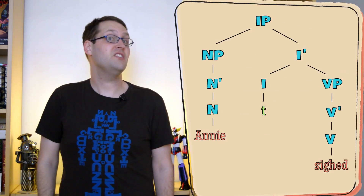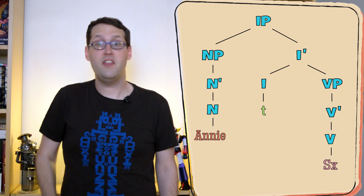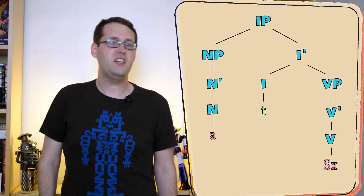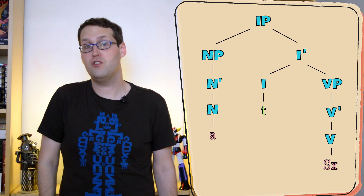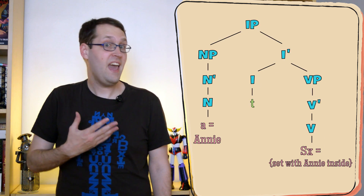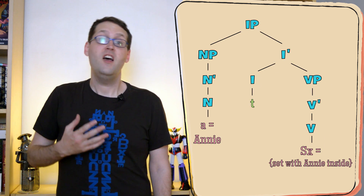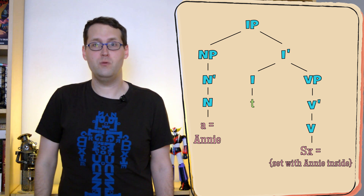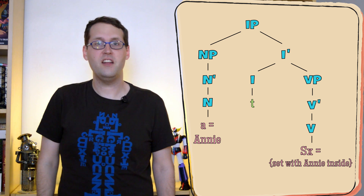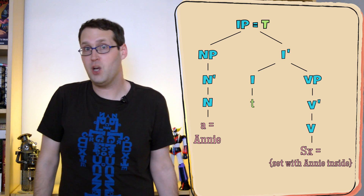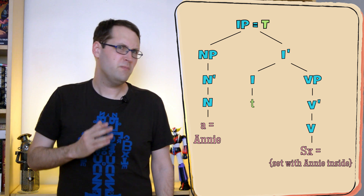Let's back up a bit and start with a simple sentence like 'Annie sighed.' If we think of the verb 'sigh' as a predicate, and the noun 'Annie' as an individual that the predicate might apply to, predicate logic can tell us the contribution of each piece to the truth conditions of the sentence. Specifically, predicate logic tells us that A refers to a person like Annie, that the predicate S(x) refers to a list of every individual it applies to — so every person that's signed — and that the whole sentence ends up as true just as long as that person can be found somewhere inside that list.